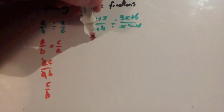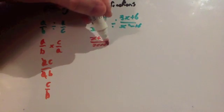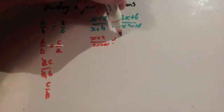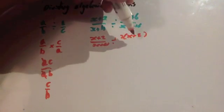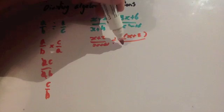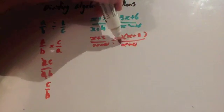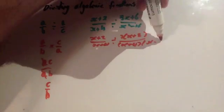So you're going to get X plus 2 over X plus 4, divided by — and I'm still going to be dividing because I'm just factorising — 3 bracket X plus 2 over, and that's the difference of two squares, so you're going to get X plus 4 and X minus 4.